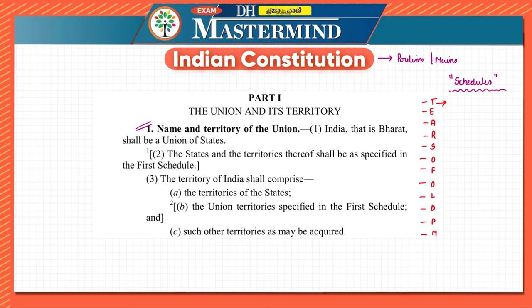In the first schedule it speaks about states and union territories — T stands for territories. E stands for emoluments: the allowances and privileges given to the President of India, Governor, Speakers, Deputy Speaker, Chairman, Deputy Chairman, etc., mentioned under the second schedule. A stands for oath and affirmations — whatever oath union and state ministers, candidates for election to Parliament and state legislatures take is mentioned in the third schedule.